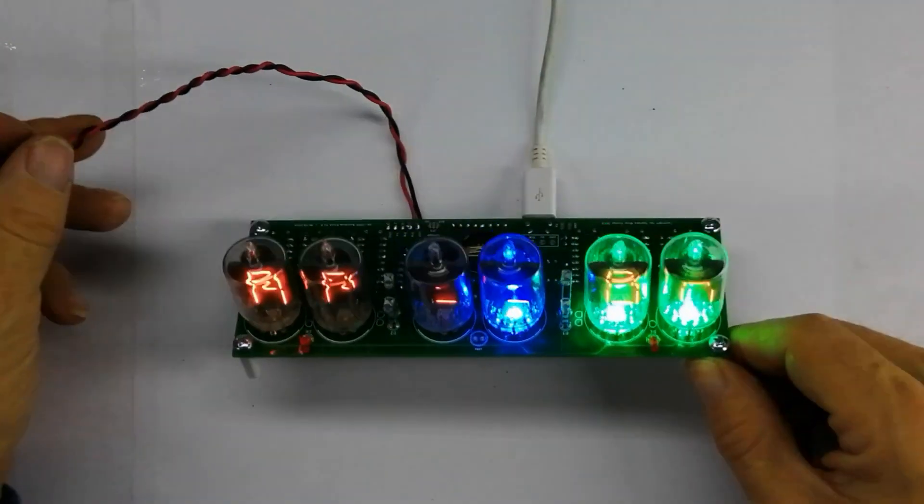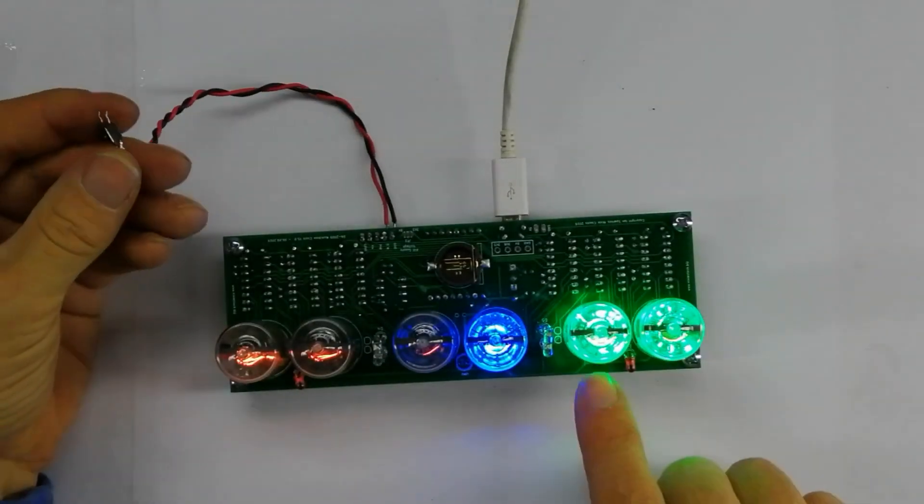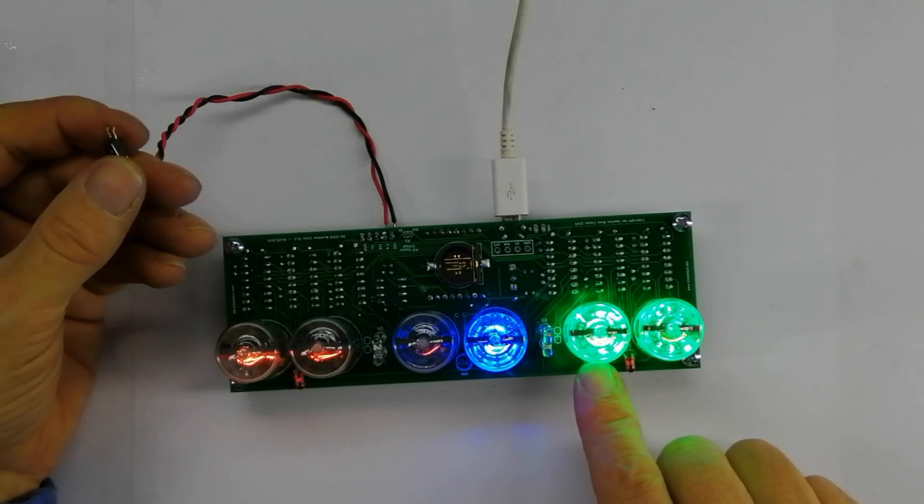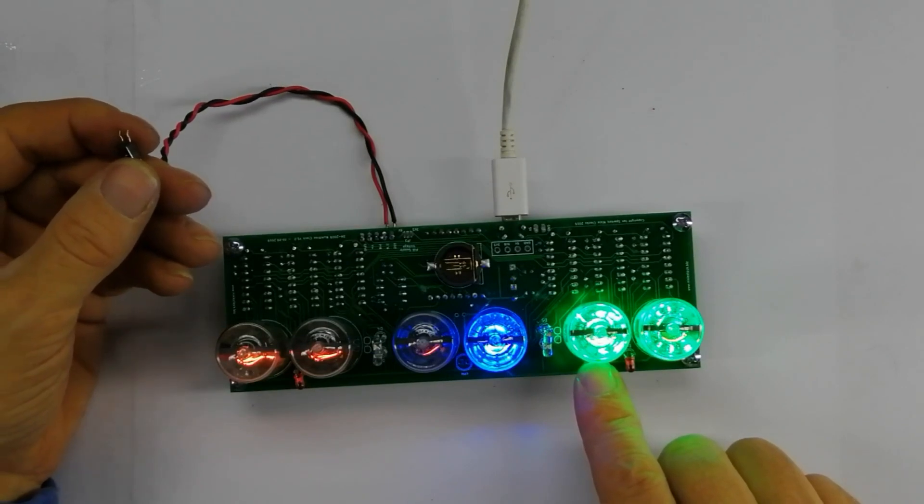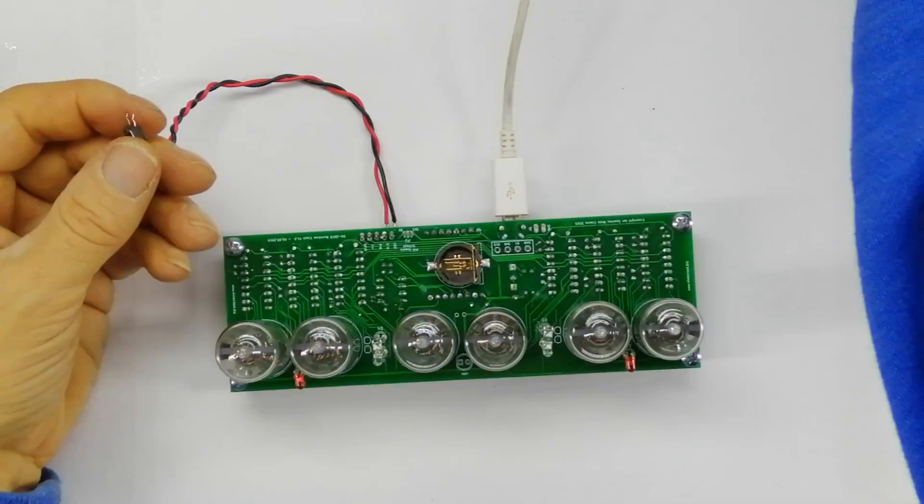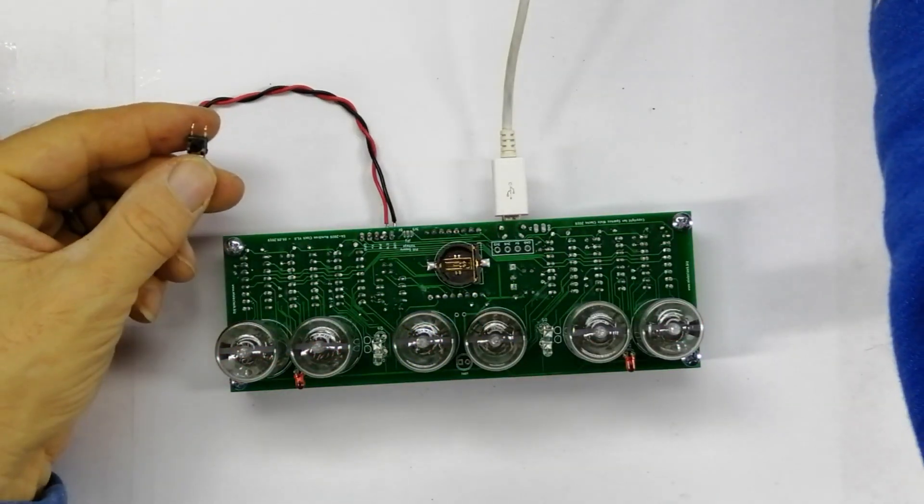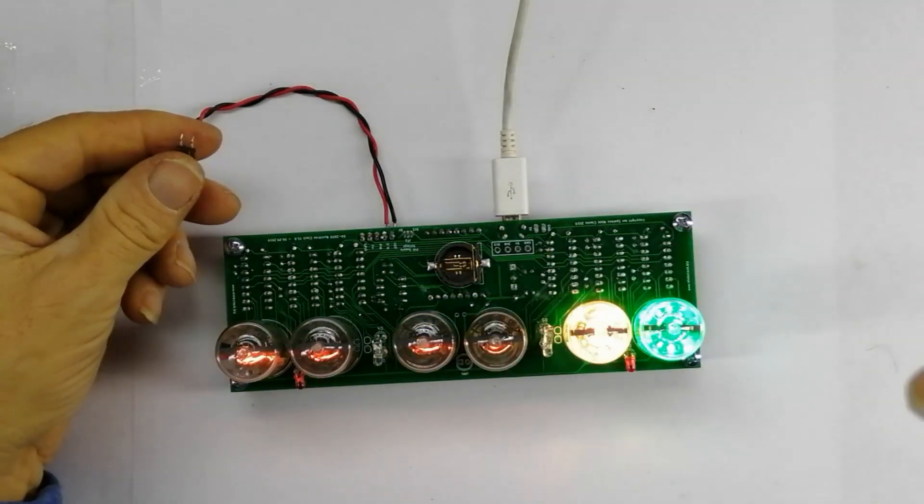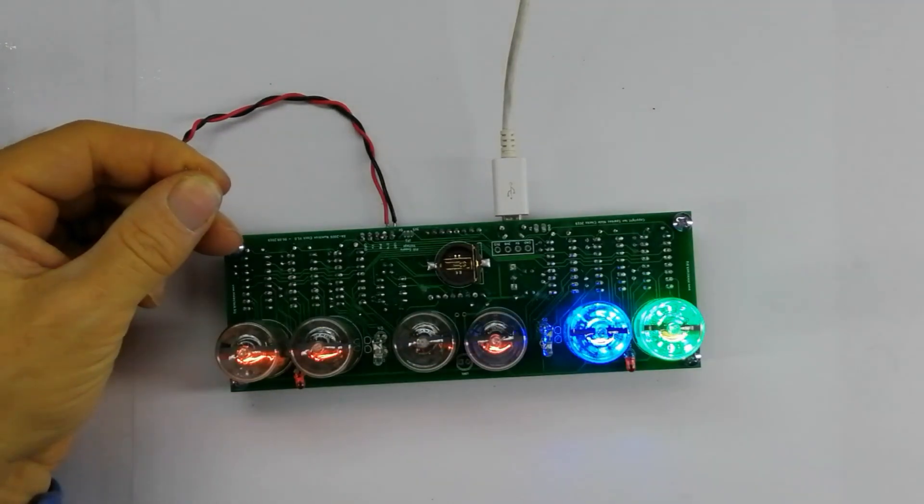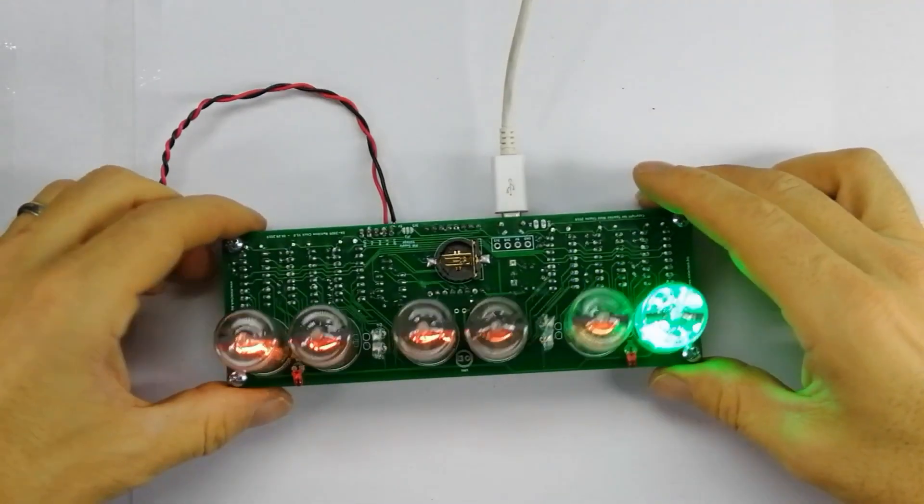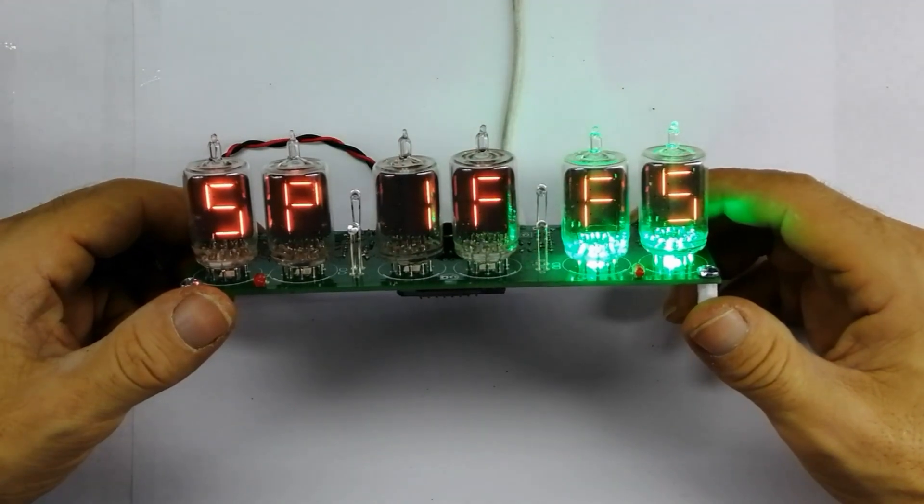To do a factory reset we have to hold down the button when the tens of seconds LED comes yellow. Here we go: power on, yellow, hold down the button. Okay, and now we'll do a factory reset and start all over again.